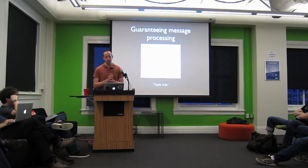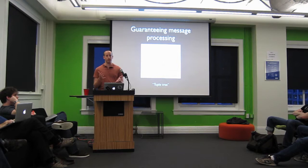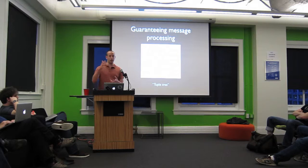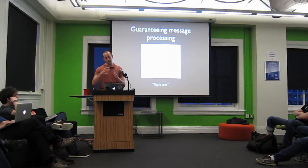First thing you have to decide is what does it mean to guarantee data processing? Let's look at what happens during processing. We have your spout which emits a tuple, and then that tuple goes to some set of bolts, and then they emit tuples based on that spout tuple. Those tuples go to other bolts, and they emit tuples based on those tuples. You end up with this kind of tree of messages, all triggered from that original spout tuple.